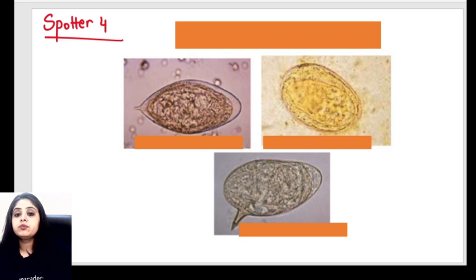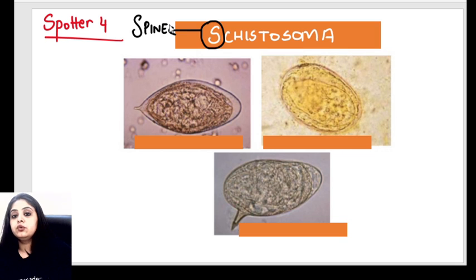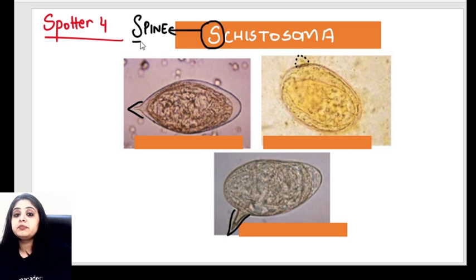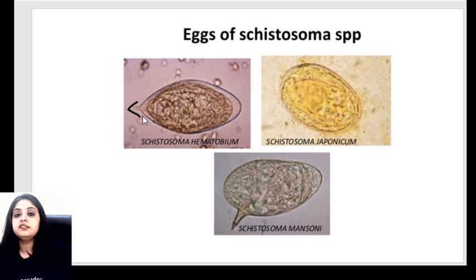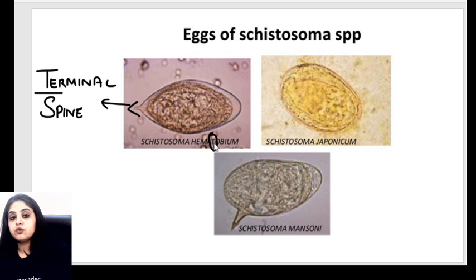Since we are talking about microorganisms, let's put the fourth spotter on the same lines. These are three eggs, all belonging to the same species — schistosoma. We know that schistosoma eggs are the eggs which have a spine. The first egg shows a terminal spine — it's at the tip of the egg. Terminal has a T in it, and so does hematobium. So schistosoma hematobium shows a terminal spine.